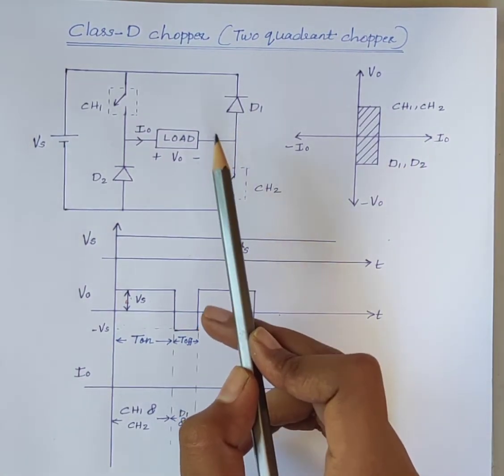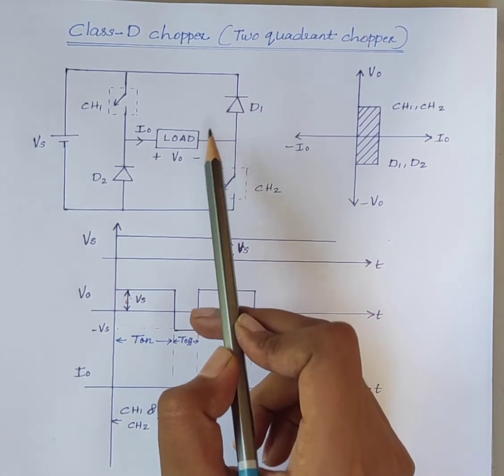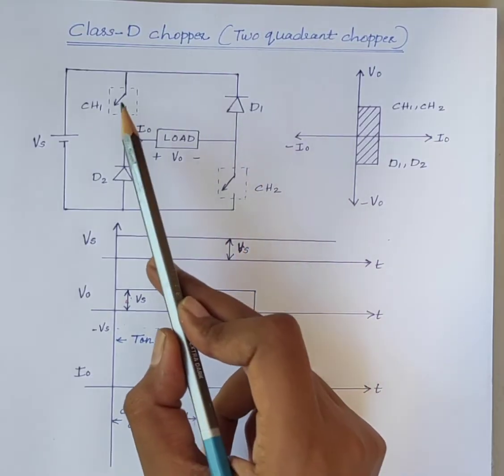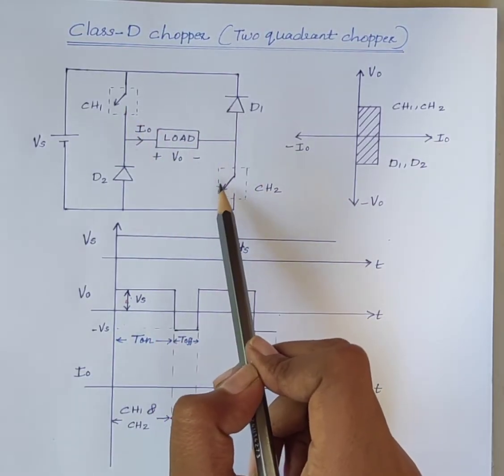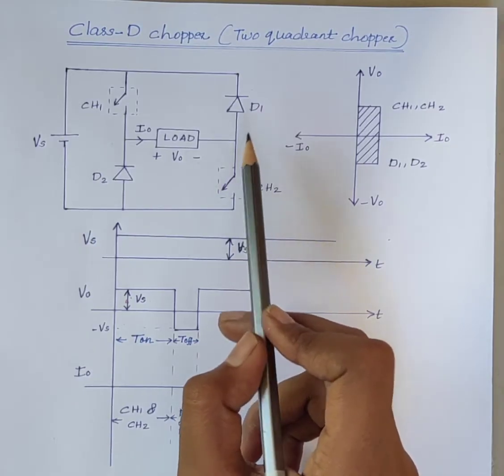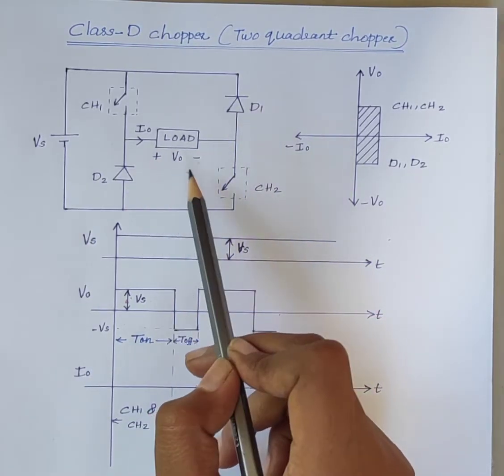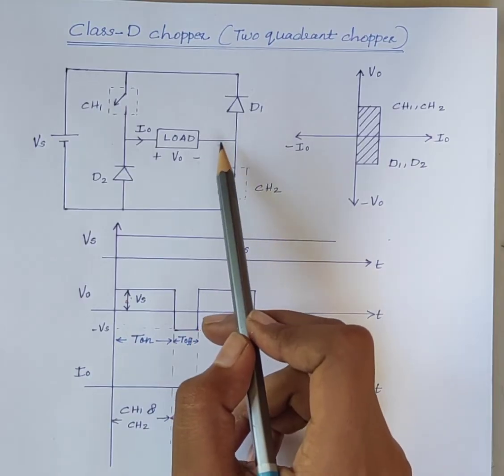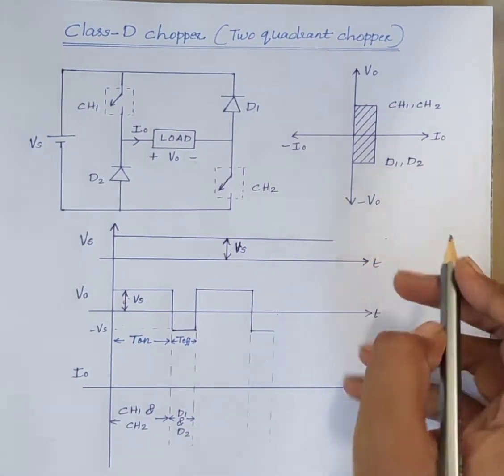The figure shows the circuit diagram of class D chopper. Here, CH1 and CH2 represent two choppers and D1 and D2 are the two diodes. Consider the first case.